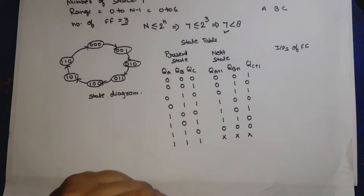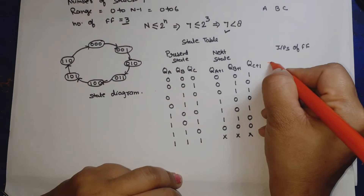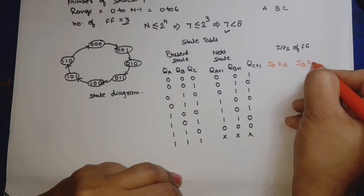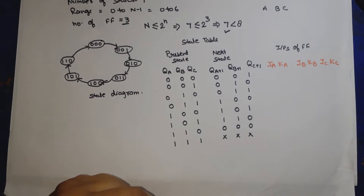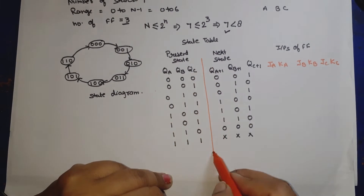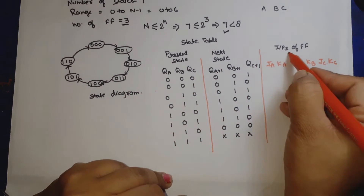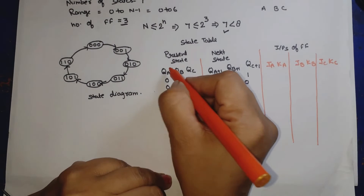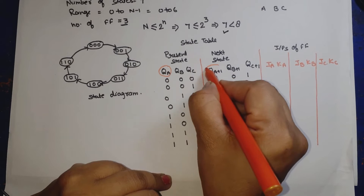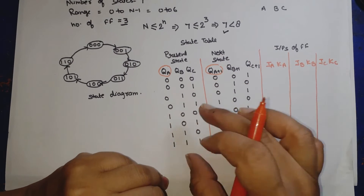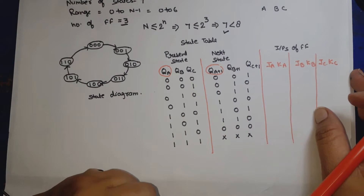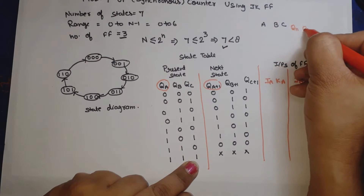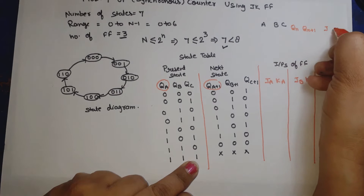Now we write the flip-flop inputs: JA, KA, JB, KB, JC, KC — because there are three flip-flops. To fill these in, we need the JK flip-flop excitation table. The excitation table shows: when QA=0 and QA+1=0, then J=0, K=don't care; when QA=0 and QA+1=1, then J=1, K=don't care; when QA=1 and QA+1=0, then J=don't care, K=1; when QA=1 and QA+1=1, then J=don't care, K=0.